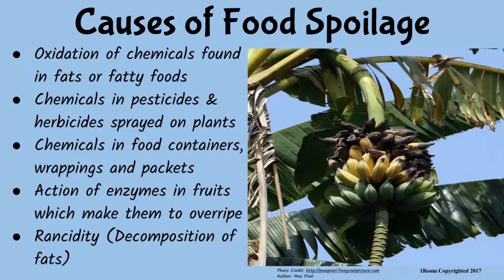Food spoilage is caused by chemical changes that occur in the food due to a number of reasons. Oxidation of chemicals found in fatty foods can easily cause rotting. Also, agrochemicals sprayed on plants contain chemicals that can lead to food spoilage. These chemicals can also be found in food containers and wrappings. Enzymes cause fruits to overripen, and rancidity — the decomposition of fats — is another cause.